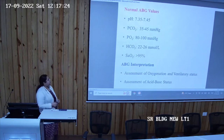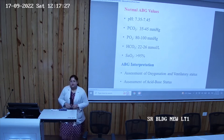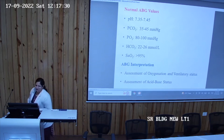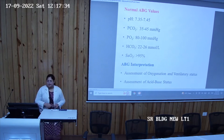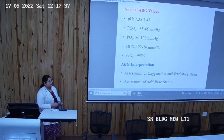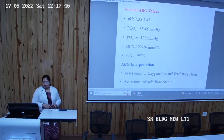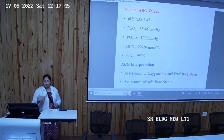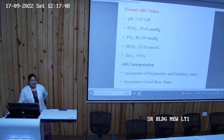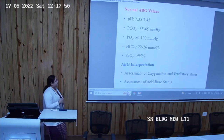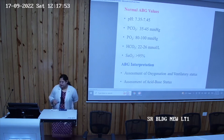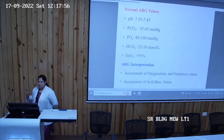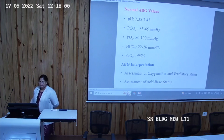The normal values are: pH — 7.35 to 7.45; partial pressure of carbon dioxide — 35 to 45 mmHg; partial pressure of oxygen — 80 to 100 mmHg; bicarbonate — 22 to 26 mmol per liter; and oxygen saturation — more than 95%. From the ABG assessment, we can check the oxygen level, ventilation status, and acid-base status of the patient.